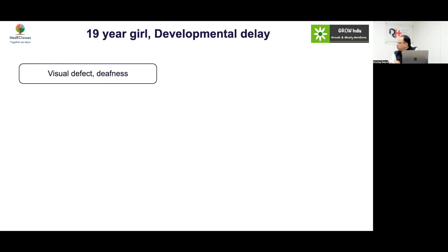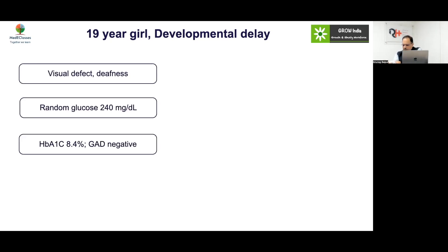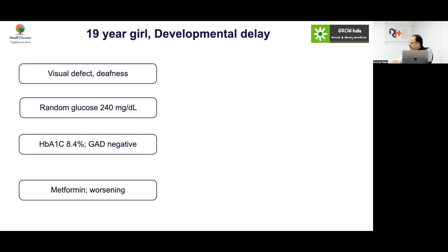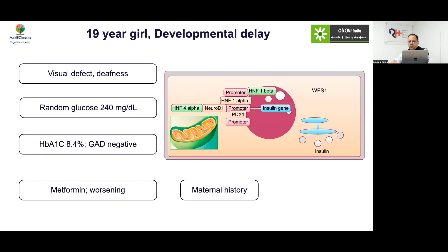Case: A 19-year-old girl with developmental delay, visual defects, and deafness. Random glucose was 240, HbA1c 8.4%, GAD negative. Metformin resulted in sudden deterioration. This presentation — with deafness and other features — is more in favor of mitochondrial diabetes. MIDD (Maternally Inherited Diabetes and Deafness) was the diagnosis. Metformin is contraindicated in mitochondrial diabetes.